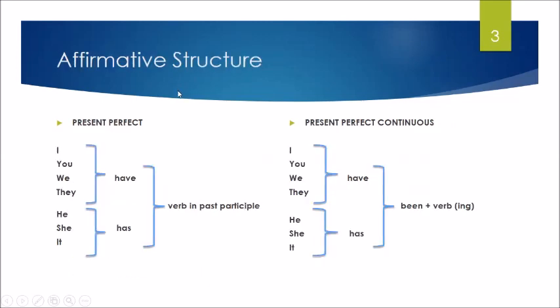Remember that the elements that we need to talk about affirmative sentences are: subject, then auxiliary verb have or has, and then the past participle for the present perfect.